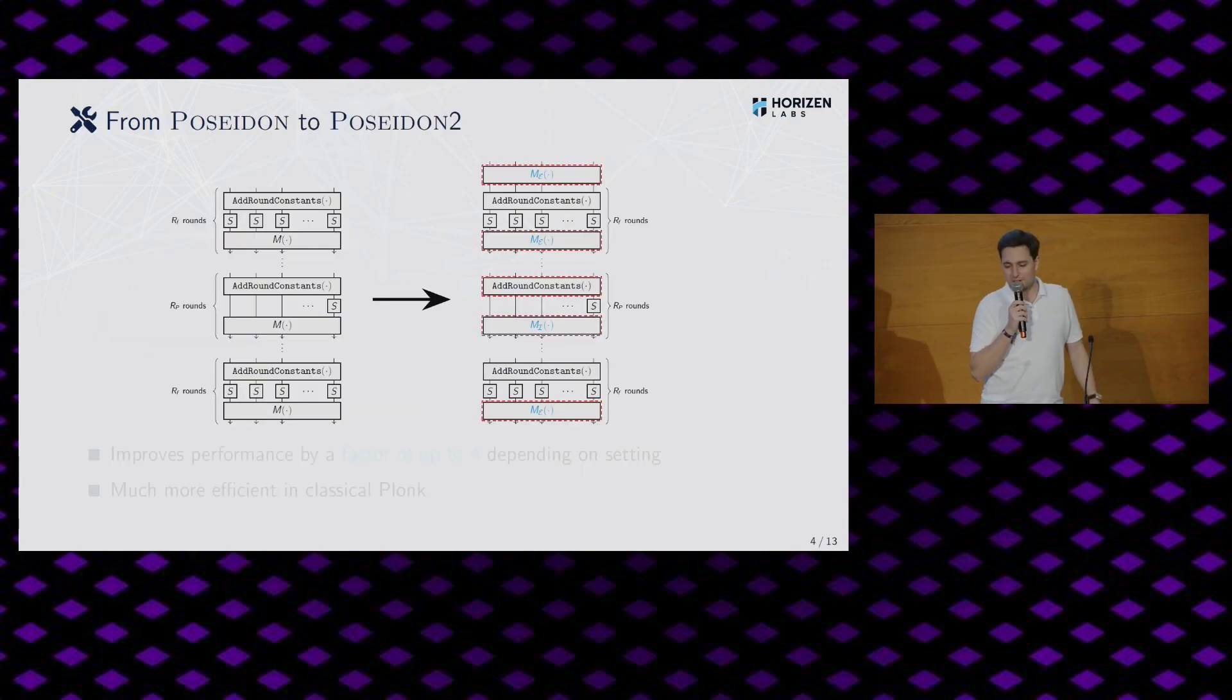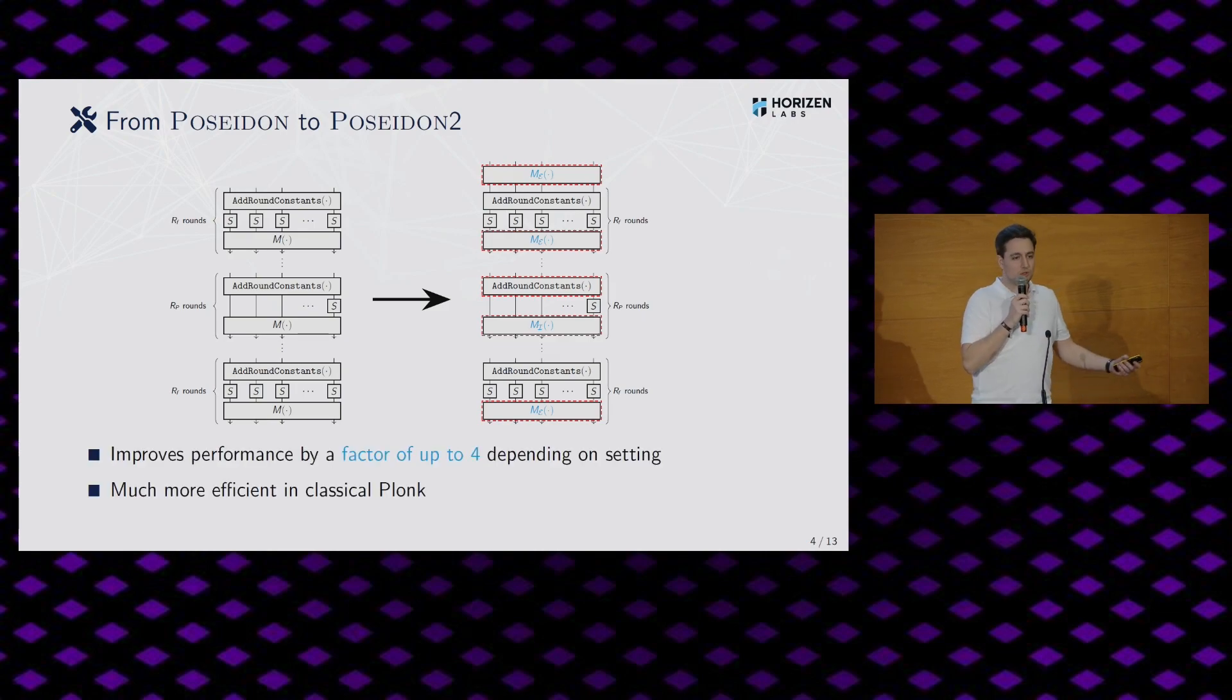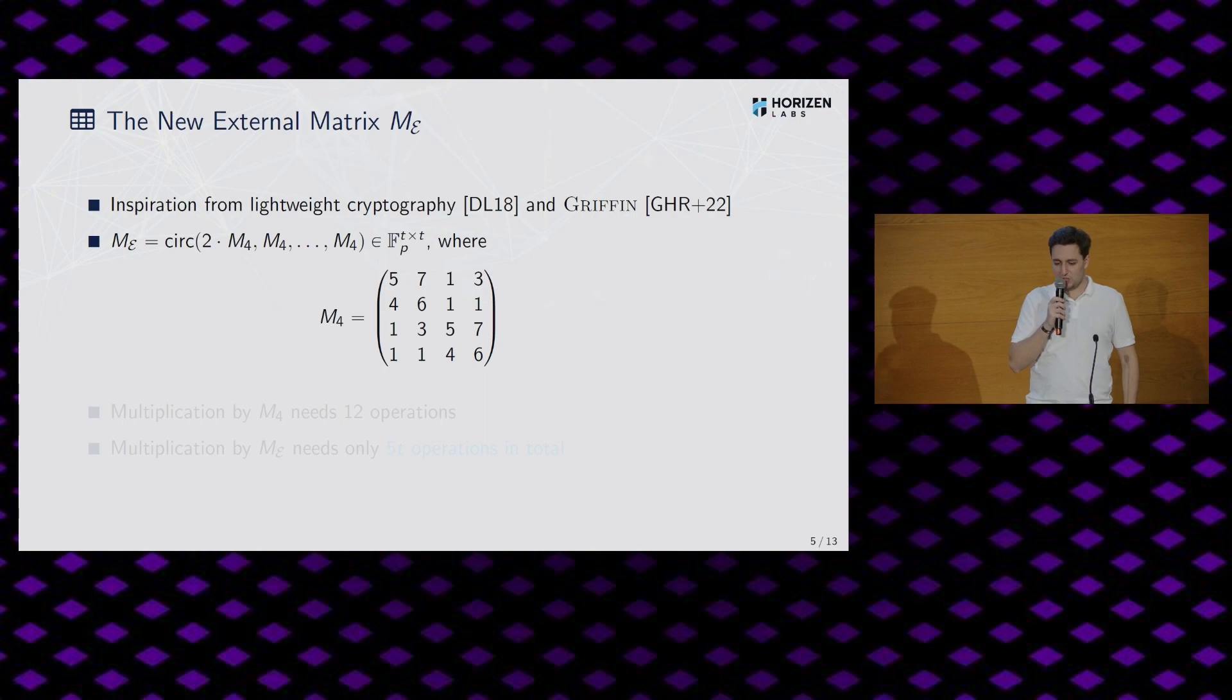All right, so first in a nutshell, what are the changes? Well, you see these highlighted in blue. We essentially exchange the matrices with two different ones. So first we have the ME matrix which is used in the full rounds, and then the MI one which is used in the partial rounds. And we also add an initial linear layer at the very beginning. I will come to that also in a minute. So why do we do that? Well, in some settings it can improve the performance by a factor of up to four. It depends, of course, on which state size you have, which prime sizes you have and so on. And it's also much more efficient in the very classical block where you still have like a limited number of columns.